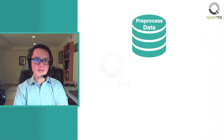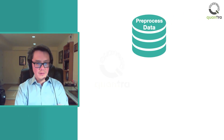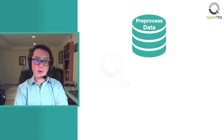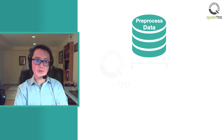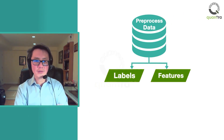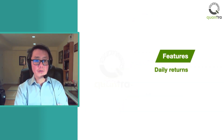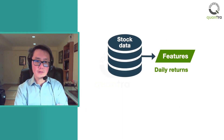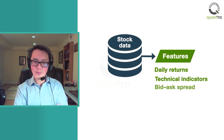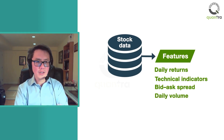After pre-processing the data, you can use it for analysis. The pre-processed data is used to create features and labels that are fed to machine learning algorithms. Features can be daily returns of the stock data, technical indicators, bid-ask spread, daily volume, and so forth.